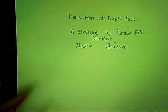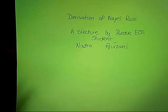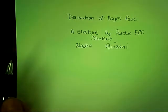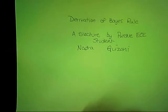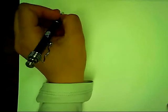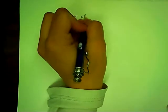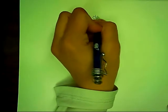Today's lecture is on the derivation of Bayes' rule in both the discrete case and the continuous case. Before we derive Bayes' rule in the discrete case, there are some parameters we need to define. The first being the prior of class I.